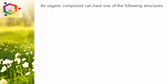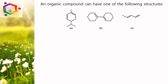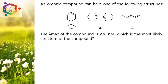An organic compound can have one of the following structures. We have 3 different structures and the lambda max of the compound is 236 nm. Which is the most likely structure? We need to find which calculated lambda max value is nearest to 236 nm.